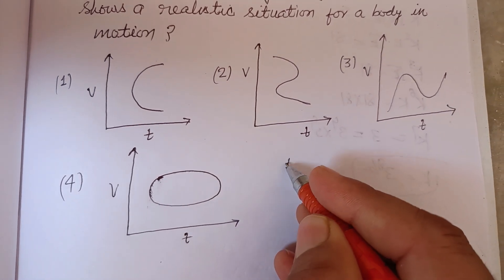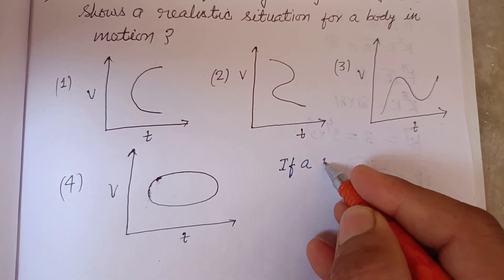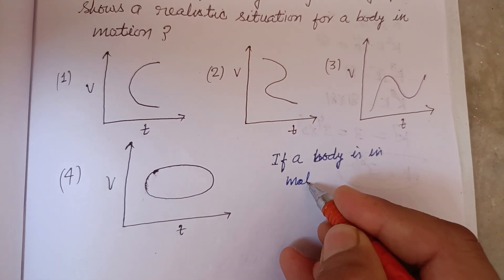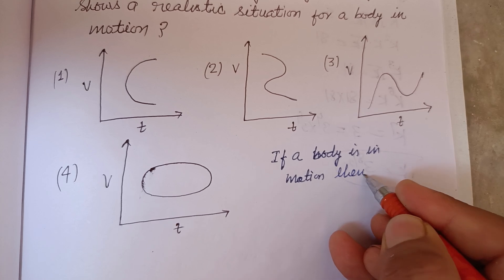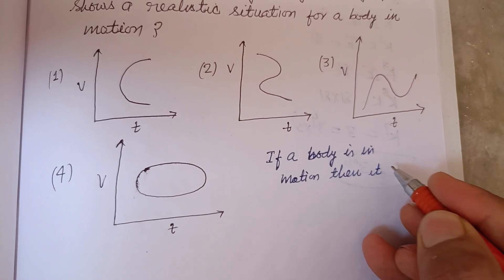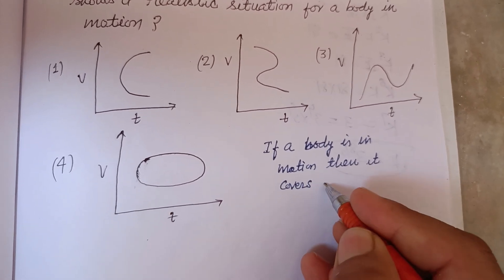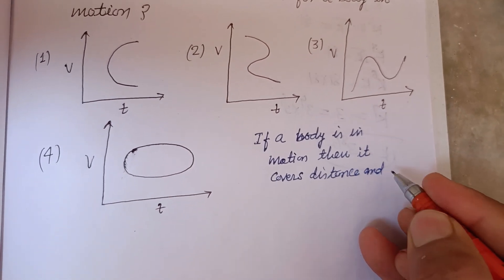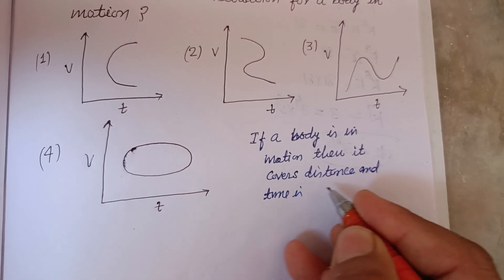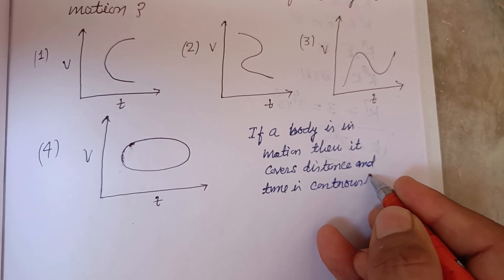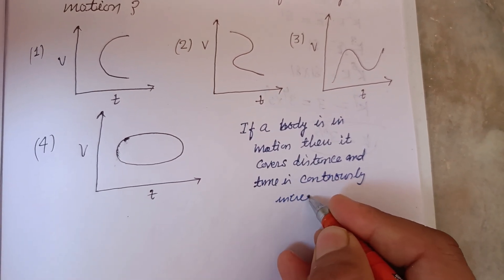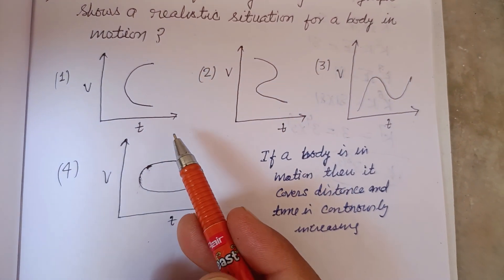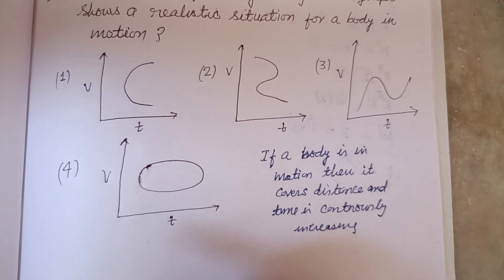If a body is in motion, then it covers distance and time is continuously increasing. So we check the graph to confirm that time is increasing with the increase in distance.